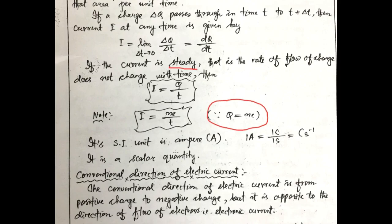Its SI unit is Ampere. 1 Ampere is equal to 1 Coulomb per second. If 1 Coulomb of charge crosses an area in 1 second, then the current through that area is 1 Ampere.